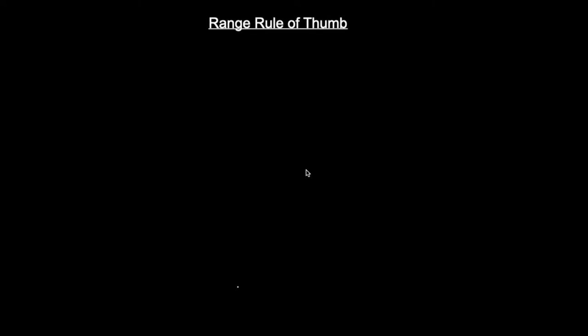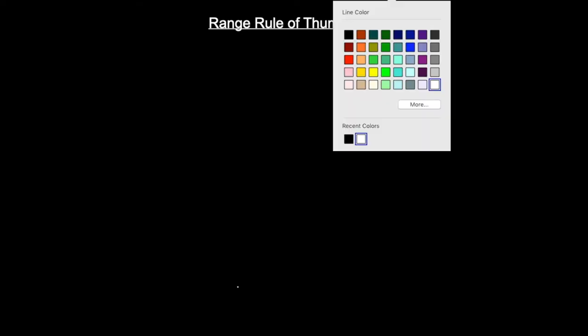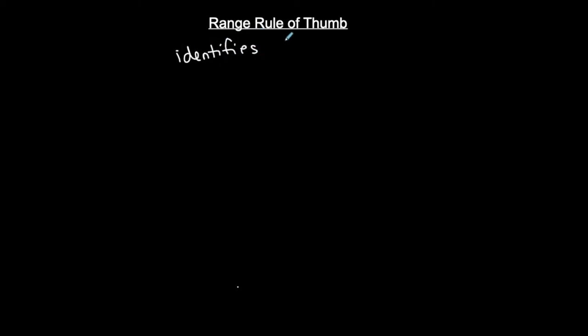Here I'm going to talk about the range rule of thumb, and you're going to hear this mentioned a lot throughout this course. The range rule of thumb identifies what we call significant values — significantly high or significantly low values — in a data set.